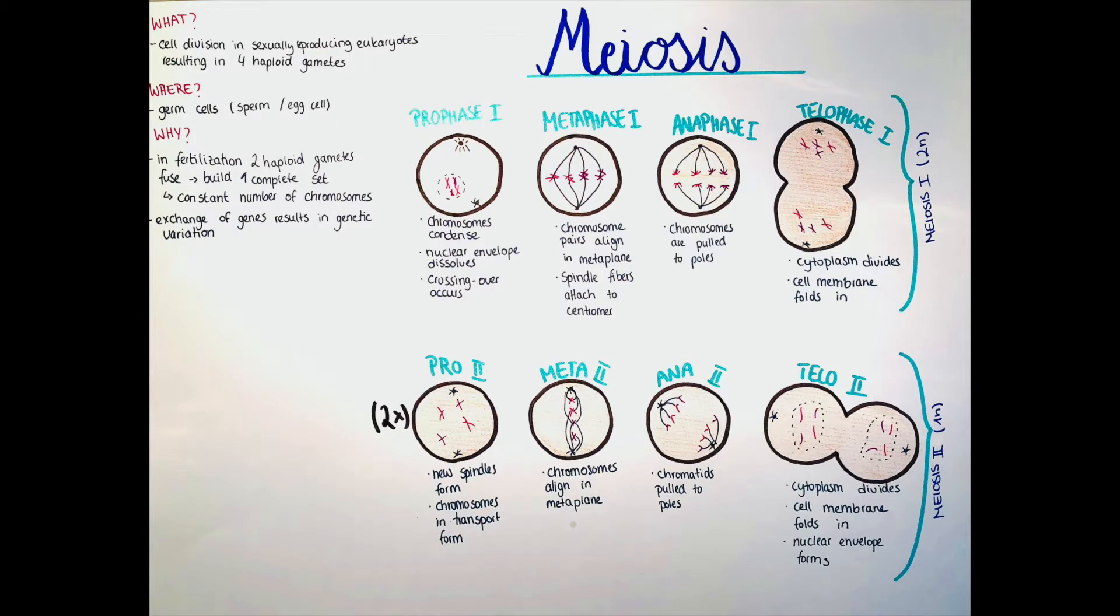So what is meiosis? It is a special type of cell division which takes place in all sexually reproducing eukaryotes like animals and humans, and it results in four haploid gametes. Gametes are, in the case of us humans, sperm and egg cells.